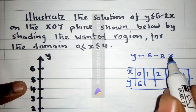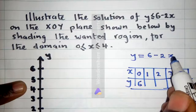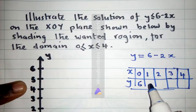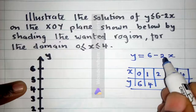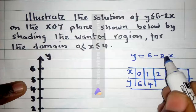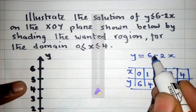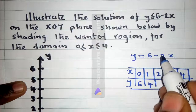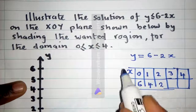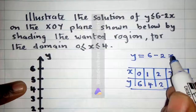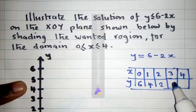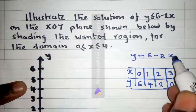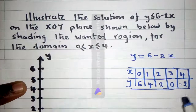When x is equal to 1, put 1 here — y will be equal to 4. When x is equal to 2, you put it here. When you solve, it will be 6 minus 4, which is 2, so y will be equal to 2. Put 3 here, you have 0. Put 4 here, you have negative 2.